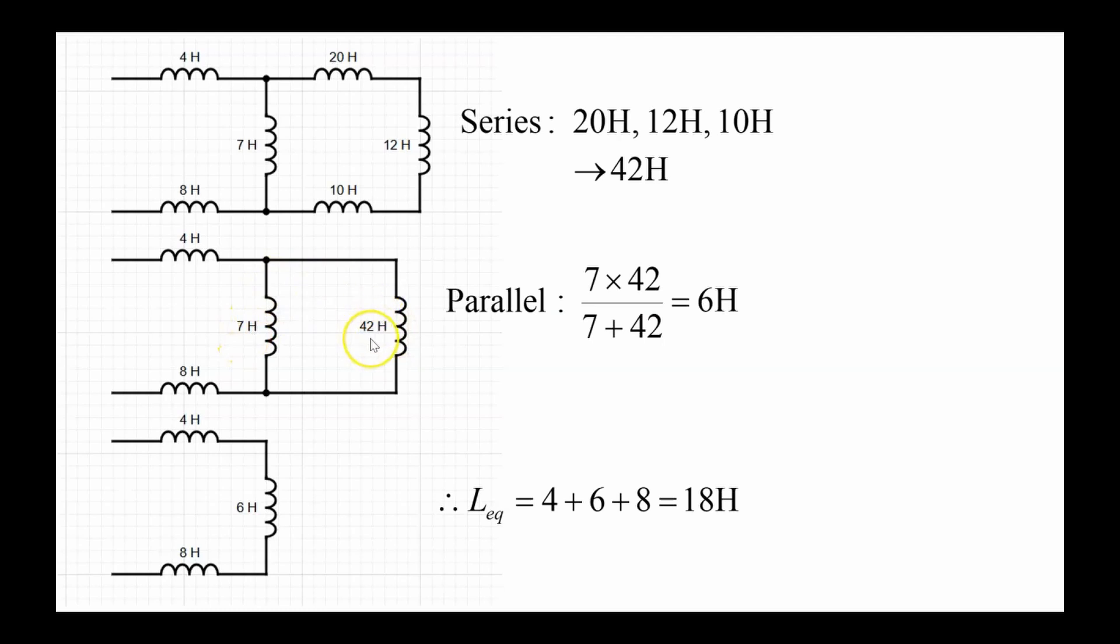So I can add those two together in parallel, producing an equivalent inductance which equals 6 Henry. I can replace this parallel combination with a single 6 Henry inductor, and then I can add these three inductors in series. The equivalent inductance of this circuit is equal to 18 Joseph Henrys.